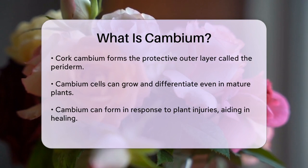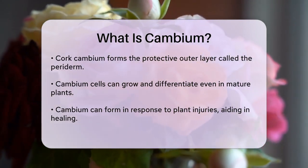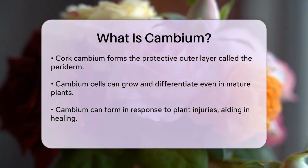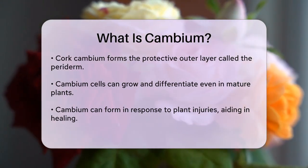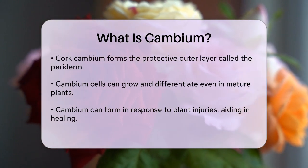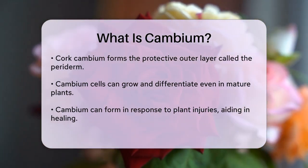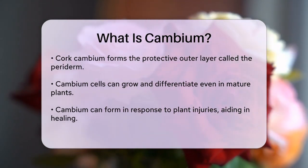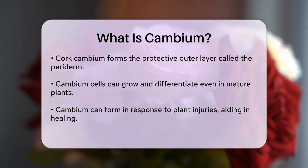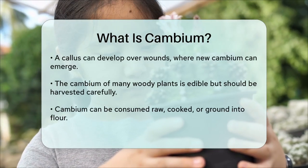These cambium cells are special because they retain the ability to grow and differentiate even after the plant has matured. This means they can keep producing new tissues throughout the plant's life. In some cases, cambium can even form in response to injuries. For example, when a plant is wounded, a mass of cells called a callus can form over the injured area, and within this callus, new cambium can develop to help the plant heal.